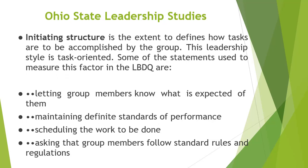The second factor is initiating structure. As mentioned, it is about production orientation, task orientation, and result orientation. A leader's degree of focus towards goals, production, and results can be high or low. High means heavy concentration on production; low means less concentration on production. So now we have four combinations: consideration (high and low) and initiating structure (high and low), which the Ohio State Leadership Studies summarize in a framework.